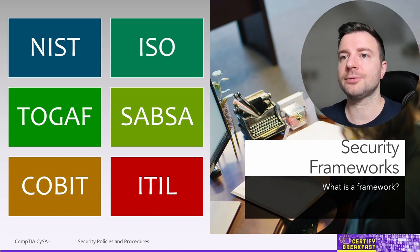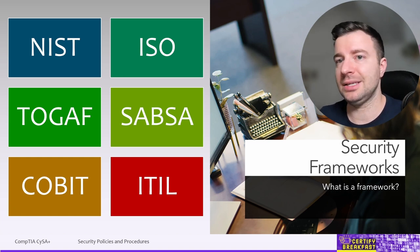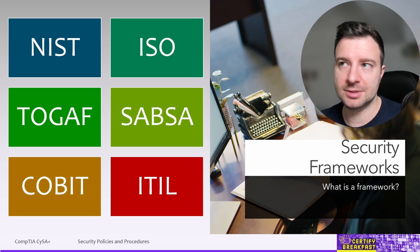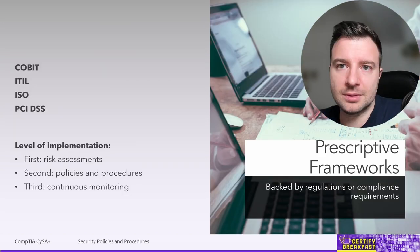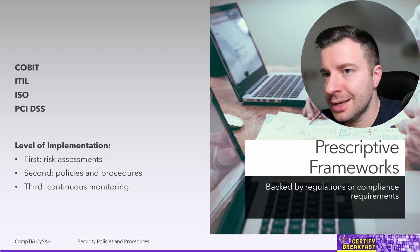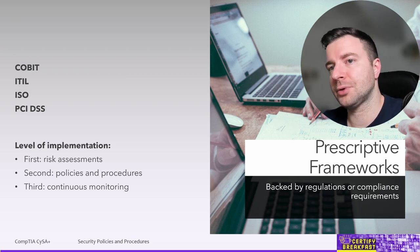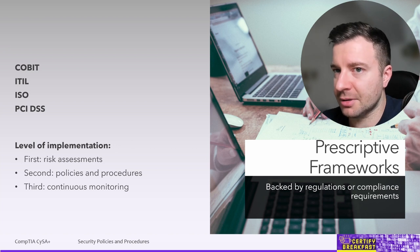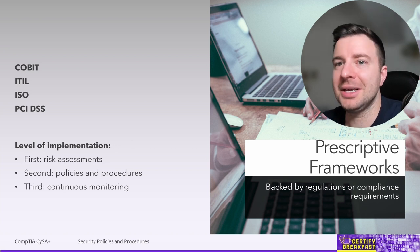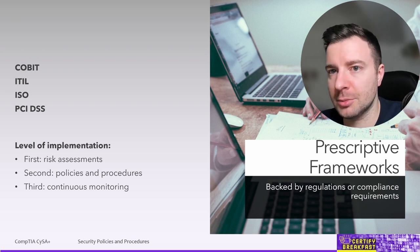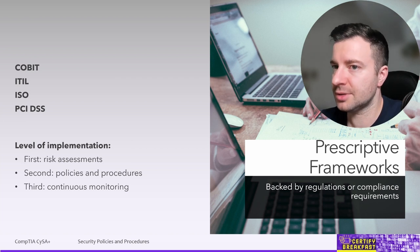Since there's no exact science in this area, there are a lot of frameworks out there. We have two categories. First, prescriptive frameworks — these are backed by regulations or compliance requirements. Among the ones we've discussed, this is where we find COBIT (Control Objectives for Information and Related Technologies), ITIL, ISO — specifically ISO 27001, which is about information security — and the Payment Card Industry Data Security Standard, also known as PCI-DSS.